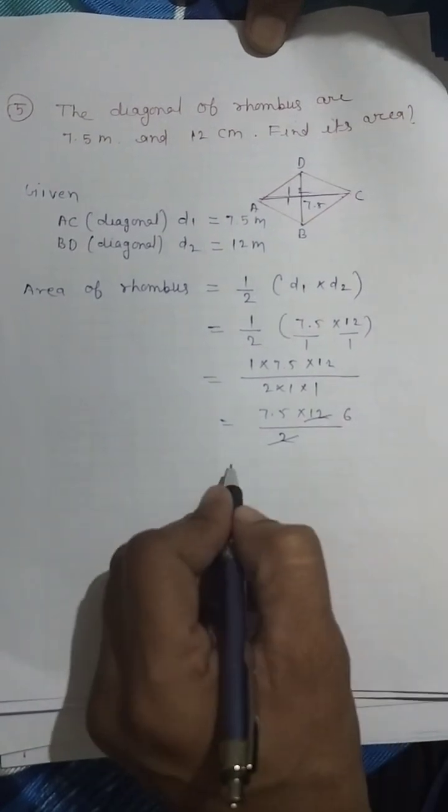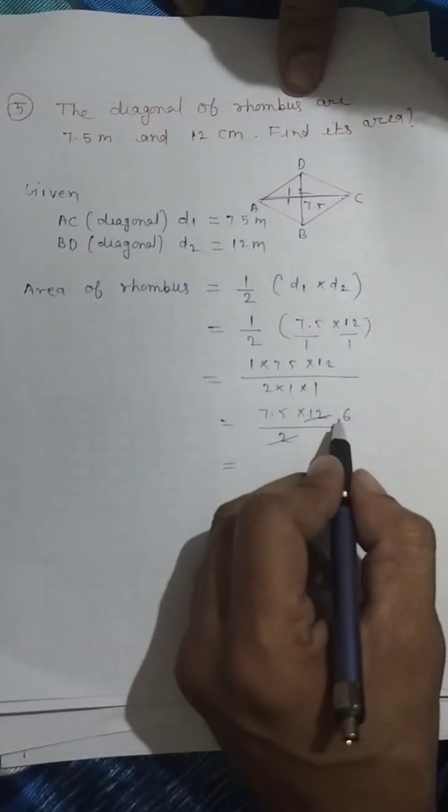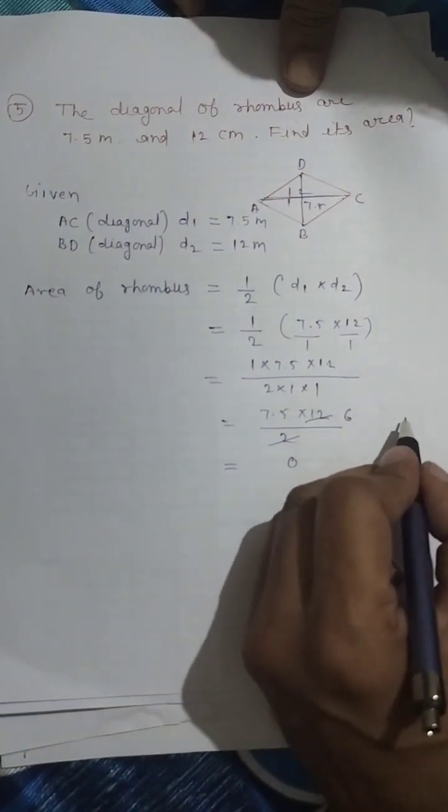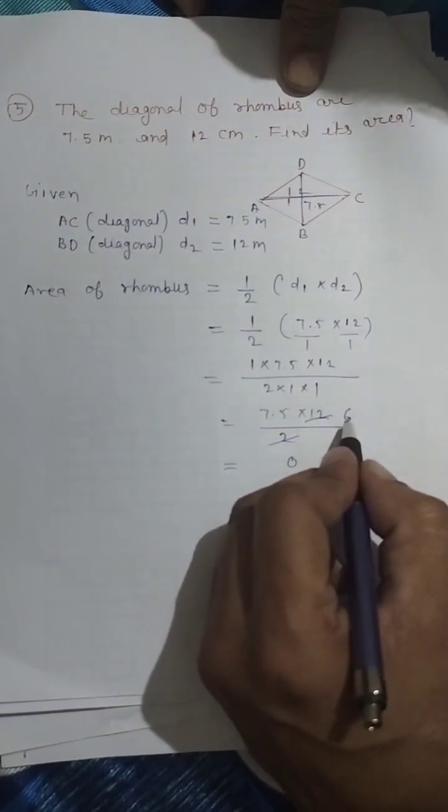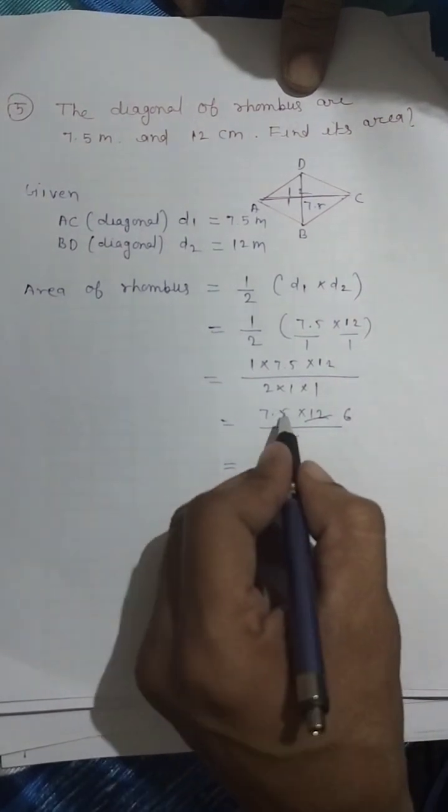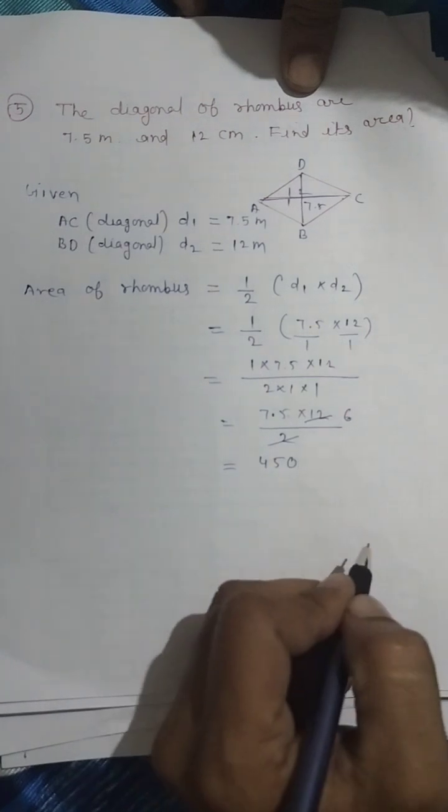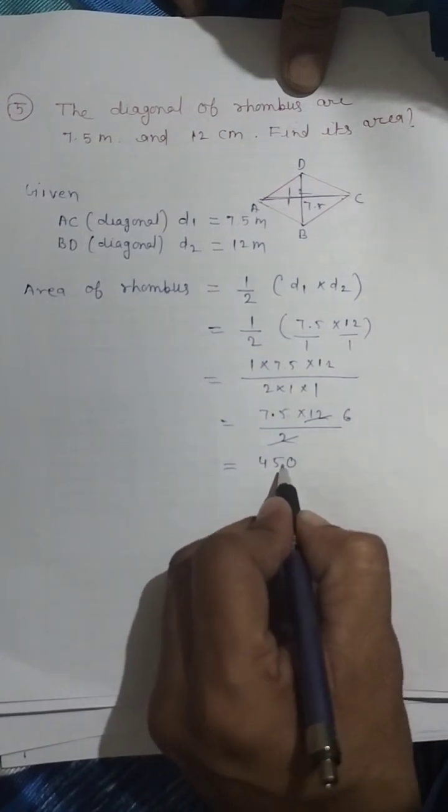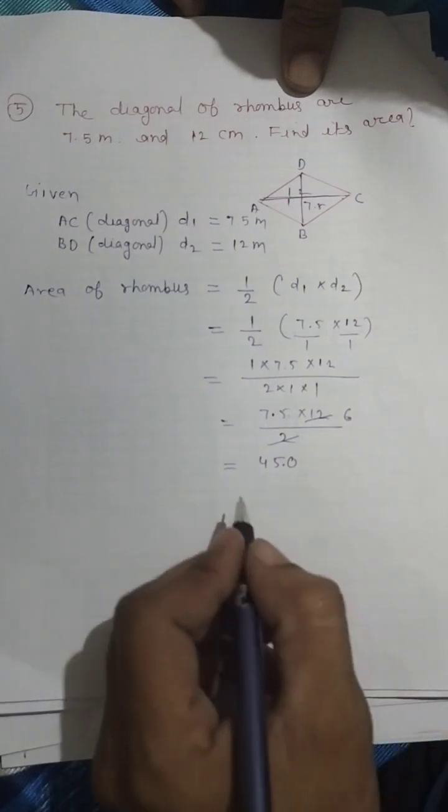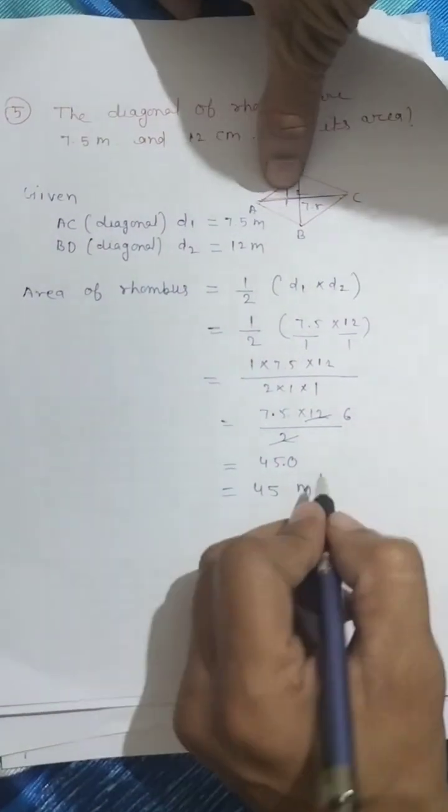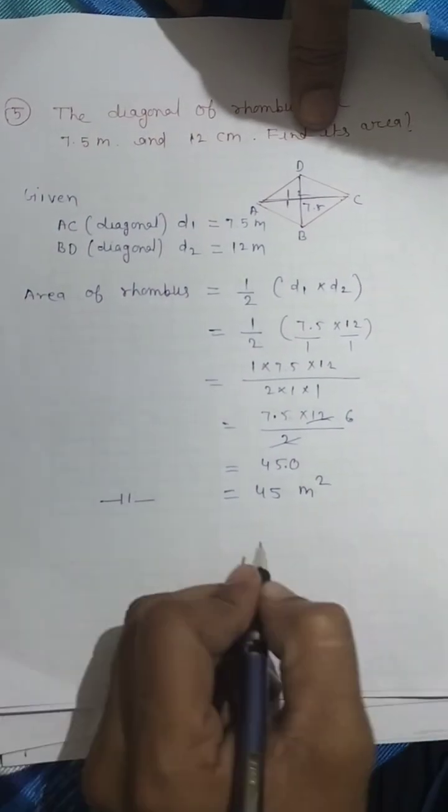7 times 6 is 42, plus 3 is 45. Since decimal is one number, we put one number behind the decimal, so our answer is 45 meter square.